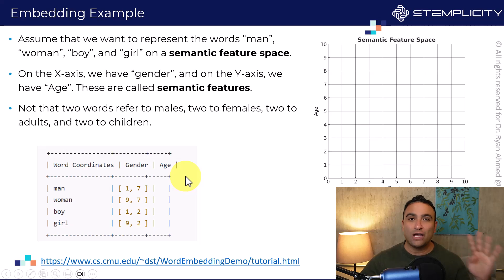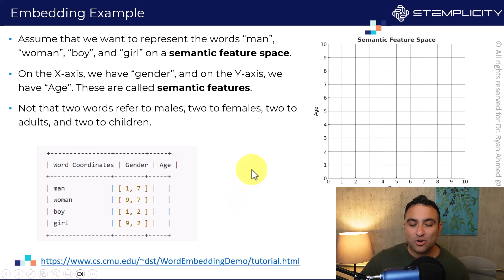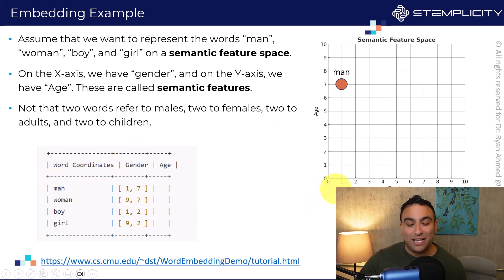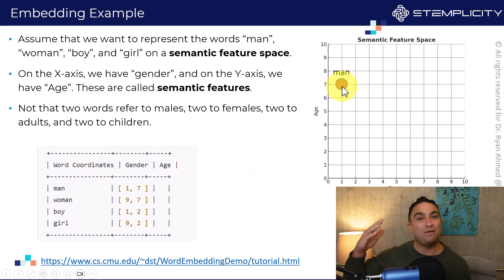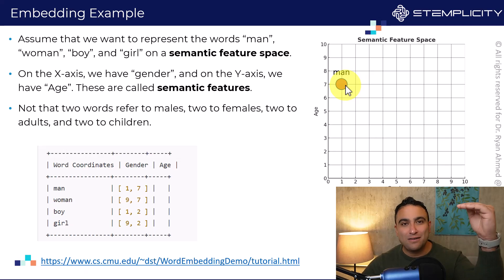All I want to do is represent these four words — man, woman, boy, and girl. The word 'man', for example, would be represented as one and seven. The idea is that on the age axis, 'man' refers to maybe an older group, that's why we give it the number seven — to indicate whether it's a man or a boy.